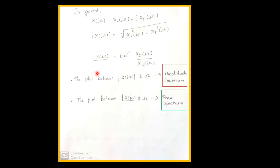If we draw a graph between |X(jω)| and ω, it is called the amplitude spectrum. If we draw the plot between ∠X(jω) and ω, it is called the phase spectrum.